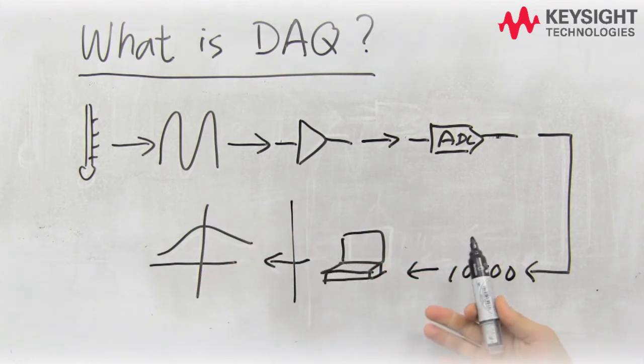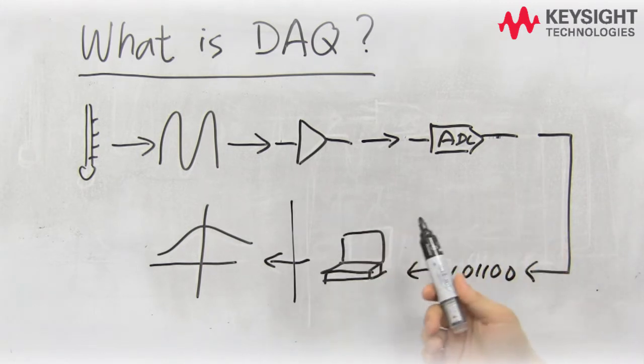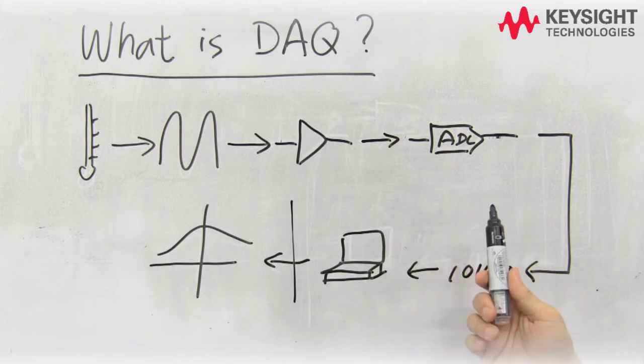So data logging is the collection of data over time, and usually it's used in scientific experiments or to monitor a process. Most of the time, data logging can be done automatically under computer control.